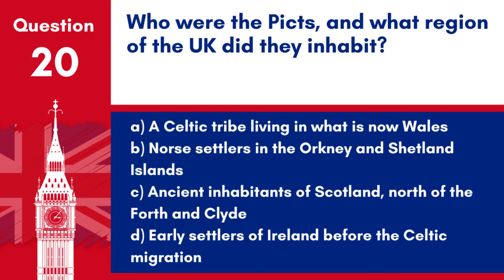Question 20. Who were the Picts, and what region of the UK did they inhabit? a. A Celtic tribe living in what is now Wales. b. Norse settlers in the Orkney and Shetland Islands. c. Ancient inhabitants of Scotland, north of the Forth and Clyde. d. Early settlers of Ireland before the Celtic migration. Answer: c. The Picts were a group of ancient peoples who lived in what is now Scotland, north of the Forth and Clyde estuaries, playing a significant role in the early medieval history of Scotland.